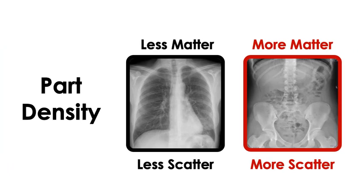The same idea applies to part density, or tissue density. This refers to the amount of matter packed into the space of the tissue. The chest is mostly full of air, which is lower density, which means there's less matter and less scatter.